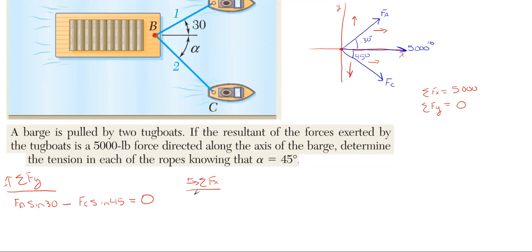So writing out the F_x equation, sticking with F_A first, we'll have F_A cosine of 30 degrees because cosine is adjacent and the angle is off the x. Then same reasoning behind F_C also being cosine of its angle, which is 45, and these two will combine to be 5,000.